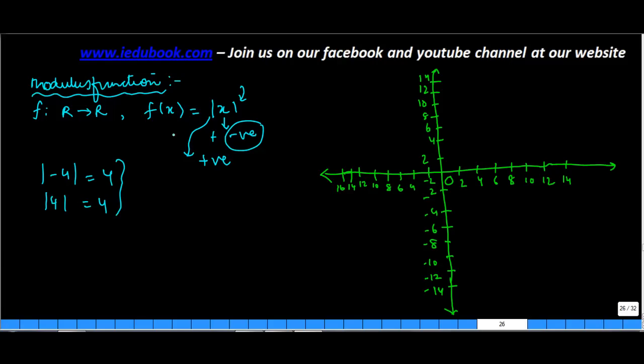Now there can be two situations in this case. Let's say x is equal to positive value. So then what will be f(x) is equal to mod x is equal to x. So what will be the coordinates? It will be x and x.